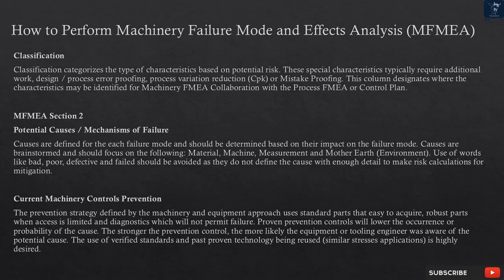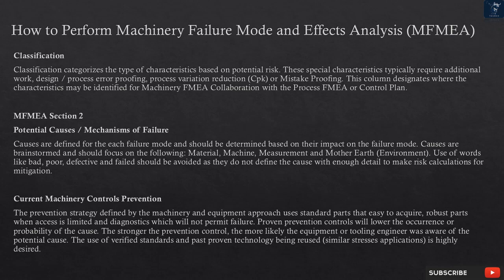MFMEA Section 2 — Potential causes and mechanisms of failure. Causes are defined for each failure mode and should be determined based on their impact on the failure mode. Causes are brainstormed and should focus on: material, machine, measurement, and Mother Earth (environment). Use of words like bad, poor, defective, and failed should be avoided, as they do not define the cause with enough detail to make risk calculations for mitigation.